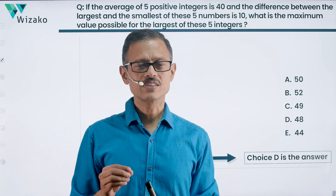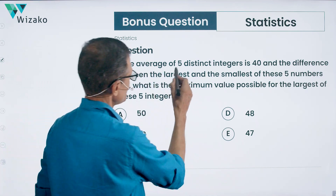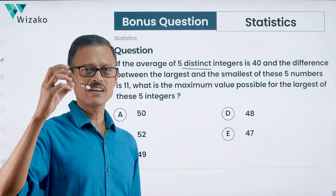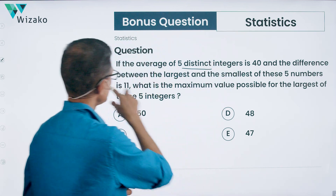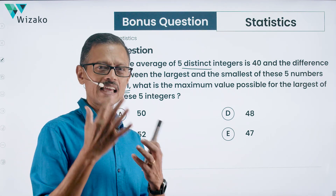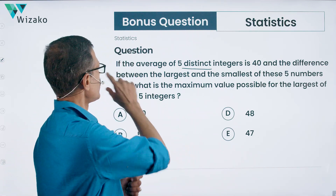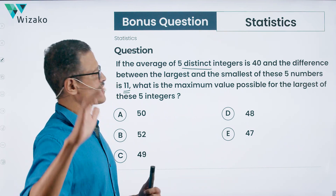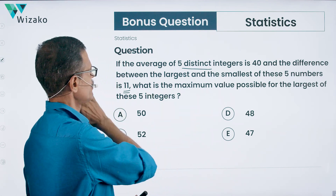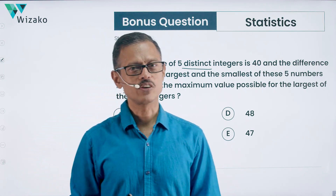I've made a small tweak to this question for the bonus. If the average of five distinct integers — note I've introduced 'distinct' and removed 'positive' — is 40, and the difference between the largest and the smallest is 11, what is the maximum value possible for the largest of these five integers? Solve this and post your answers in the comment section.